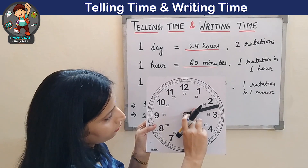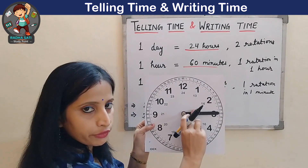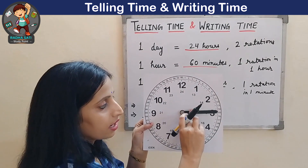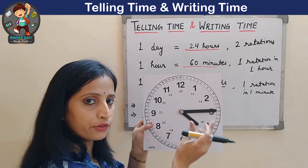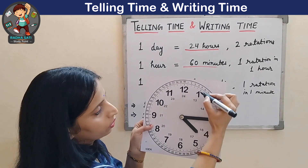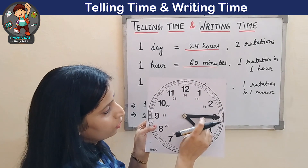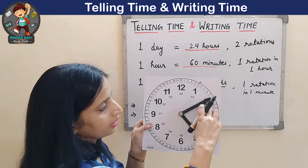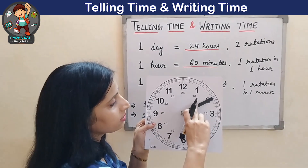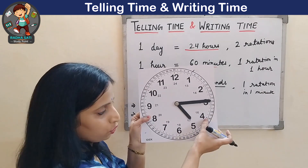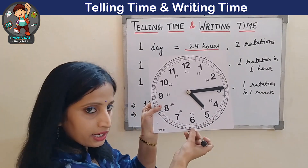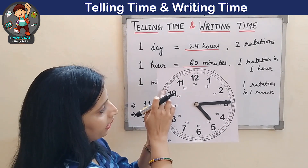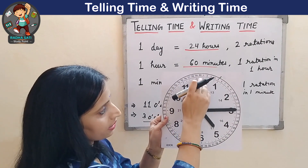As this minute hand moves further, the minutes increase by 5. We can do skip counting: when the minute hand is at 1, it is 5 minutes; at 2, it is 10 minutes; at 3, 15 minutes; then 20, 25, 30, 35, 40, 45, 50, 55, and complete 60 minutes.